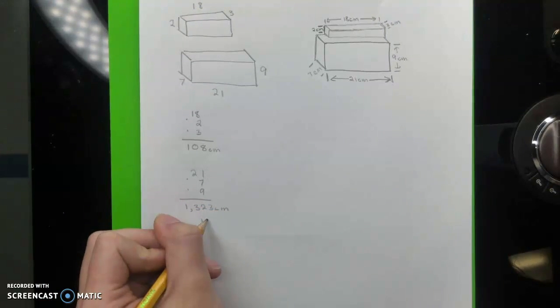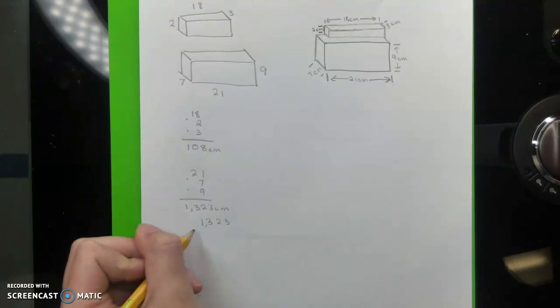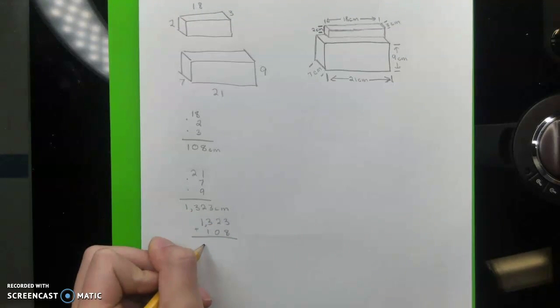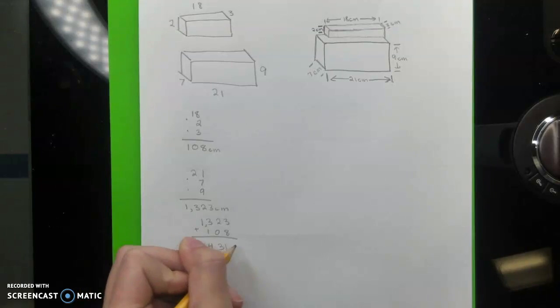Then, after that, you're going to add the volume of the small box and the volume of the big box together to get your total volume, which is 1,431 centimeters cubed.